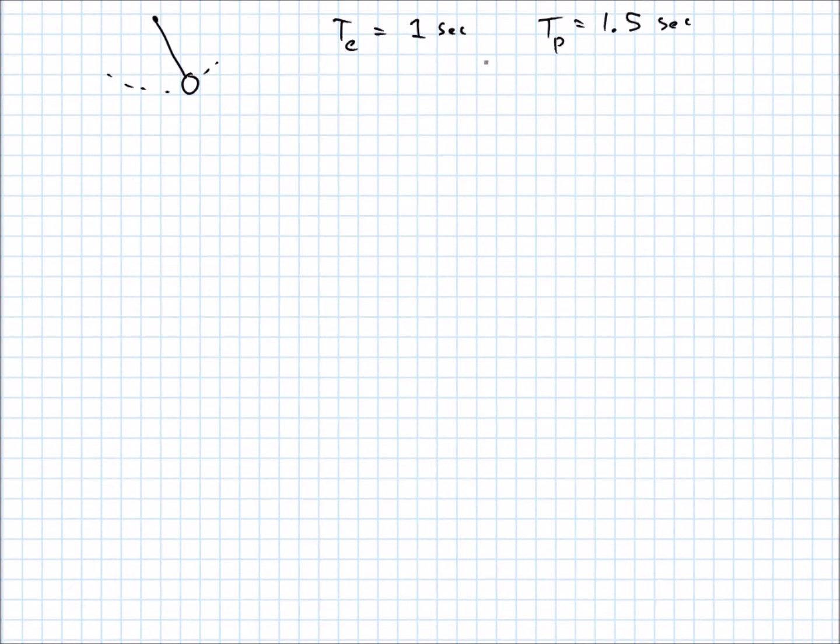And now you swing the pendulum again. We're talking about small oscillations here. You swing the pendulum again, and on this new planet, you get 1.5 seconds. So using this information, we are to find the acceleration due to gravity on this planet. So the acceleration due to gravity on Earth, remember, is 9.8, or g.